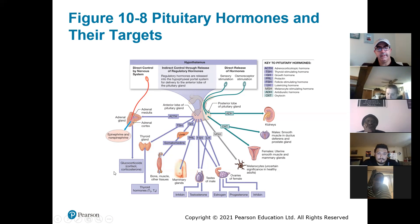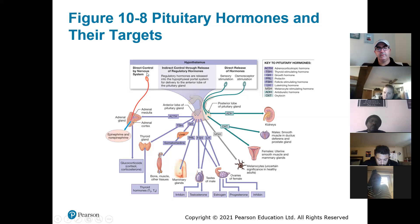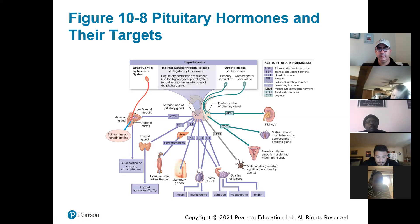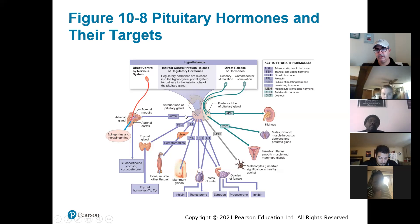Glucocorticoids include cortisol — if someone has a bad injury they might get cortisone shots, or cortisone cream for poison ivy; it's an anti-inflammatory. Separately, there's a direct connection between the brain and the adrenal medulla — the inner part of the adrenal gland. When the brain perceives a threat, it sends a neural signal to the adrenal medulla to release epinephrine and norepinephrine (adrenaline). This pathway is separate from ACTH, which only leads to glucocorticoids.